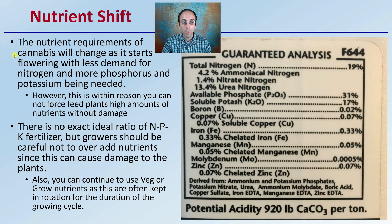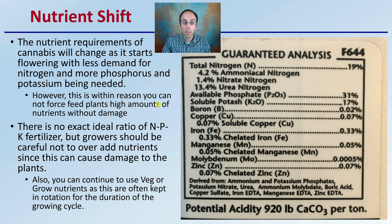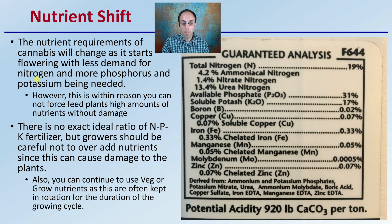The nutrient requirements of cannabis will change as it starts to flower, with less demand for nitrogen and more phosphorus and potassium being needed. However, keep in mind this is within reason — you cannot force feed plants high amounts of any nutrient without damage. Less demand on nitrogen doesn't mean no demand on nitrogen. There's no exact ideal ratio of nitrogen, phosphorus, and potassium fertilizer, but growers should be careful not to over-add nutrients, since this can cause damage to the plants.